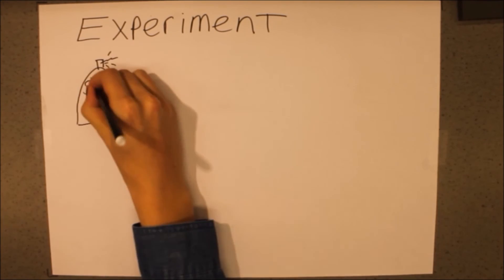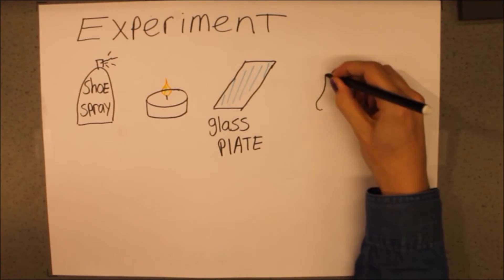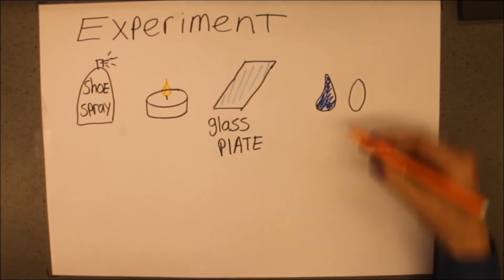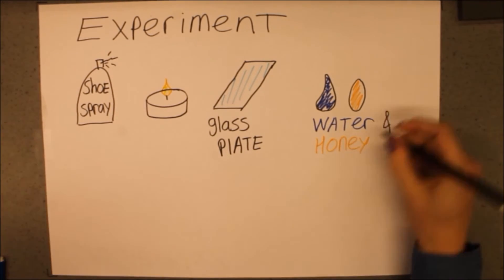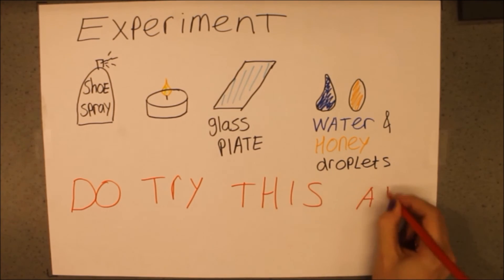We can easily perform an experiment showing that adding roughness makes the surface more hydrophobic. Just take a glass plate, hold it in a flame for a while and add some shoe spray to it. If we now drop a water droplet on it, it will just roll off, while in the case of a normal glass plate, the water droplet spreads out and leaves a trail. Do try this at home.